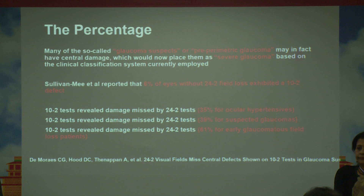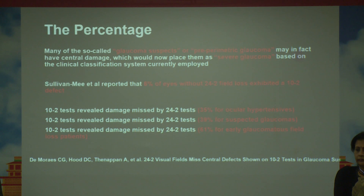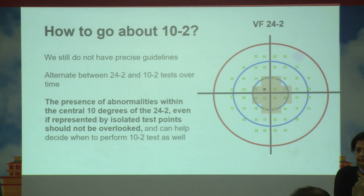According to the literature, 6% of eyes without 24-2 field loss exhibit 10-2 defects. Astonishingly, among ocular hypertensives, 35% revealed only 10-2 damage with a normal 24-2. Suspected glaucoma patients showed 39% with only 10-2 damage and normal 24-2. In early glaucoma, 61% had only 10-2 defects with no 24-2 defects. This is very significant because the central vision is being damaged and this can change the entire way glaucoma is classified, staged, and approached.